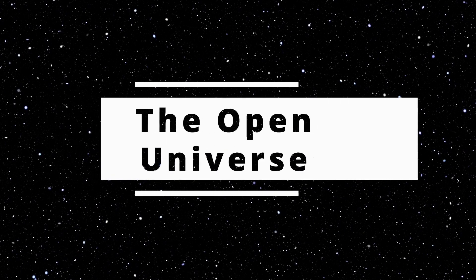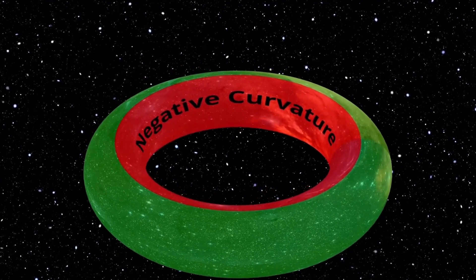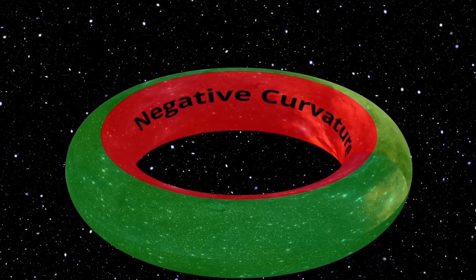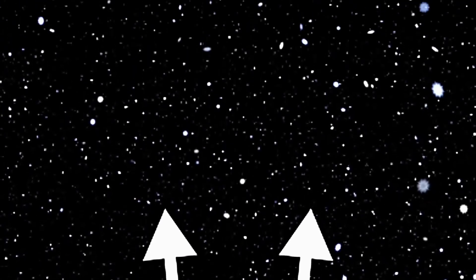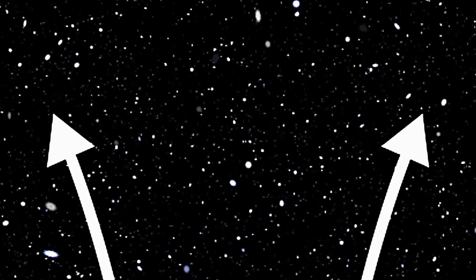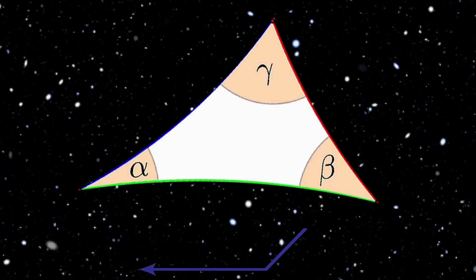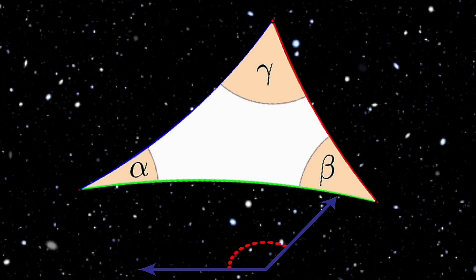The Open Universe. This universe has a negative curvature, which means it's hyperbolic in shape, or saddle-like to better imagine it. Same as before, take a two-dimensional hyperbolic plane and then generalize. Two initially parallel lines will exponentially diverge away from each other, and the sum of angles in a triangle will always be less than 180 degrees.